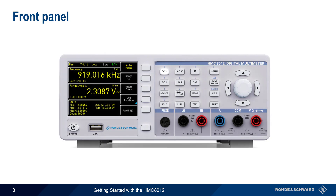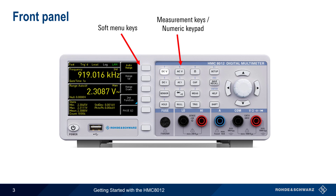Let's start with an overview of the front panel. Soft menu keys are used to view and configure most of the measurement parameters. The center group of hard keys is used to select the measurement function – DC volts, AC volts, resistance, etc. – but they can also be used as a numeric keypad by pressing the shift key. The system keys above the shift key are used for basic instrument configuration, saving and recalling settings, and accessing the built-in help function.